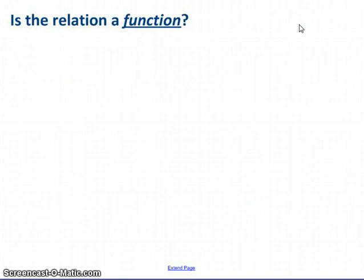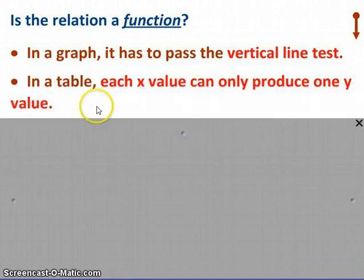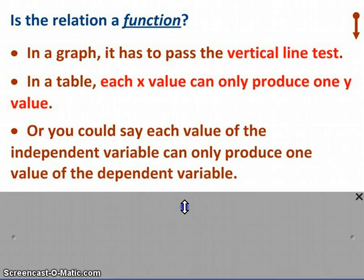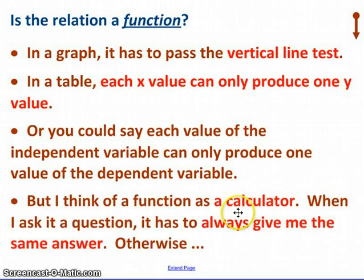Okay, so, some different ways of deciding whether or not something's a function. As I say, one way is to use the vertical line test. Another way, whether you call it a mapping diagram or a table, each x value can only produce one y value. Or you could say each value of the independent variable, remember that's the x value, can only produce one dependent variable. So, remember that's x and that's y. But the way I think of it, I think of a function as a calculator. When I put information or ask a question of a calculator, I expect it to give me the same answer to that particular question every time. If I ever ask the same question of a calculator and get two different answers, I would throw it away. So, in order for a relation to be a function, just like a calculator, that relation has to always give me the same consistent answer, not two different choices, every time I put in a particular x value, a particular input.